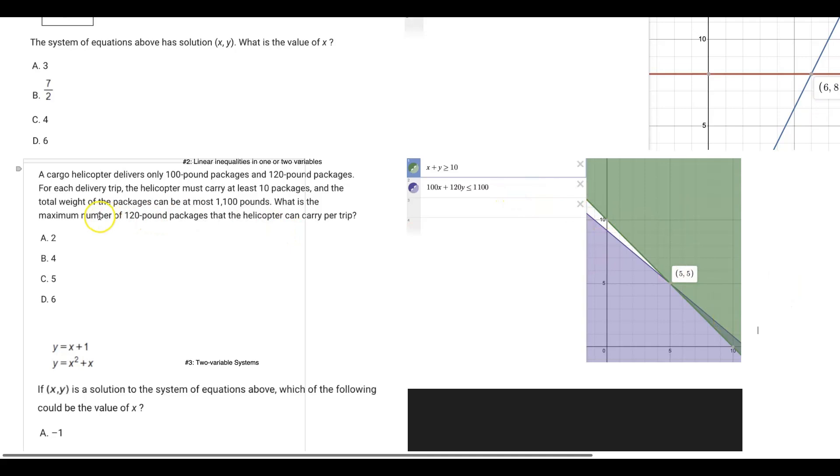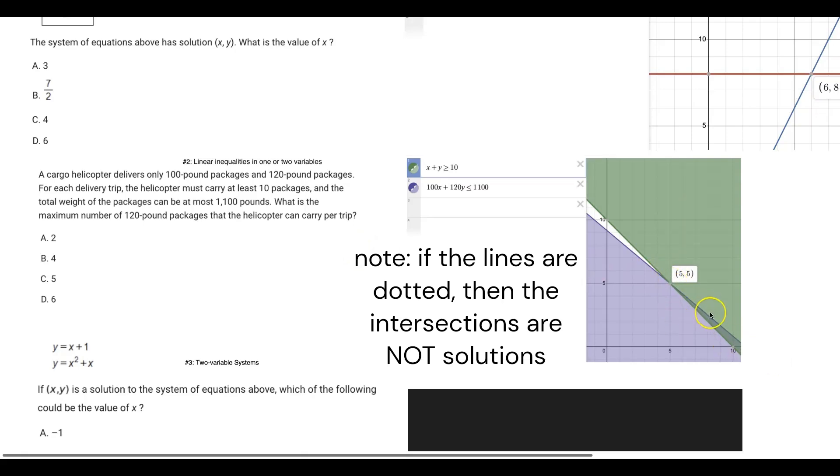At least 10 packages and also under 1,100 total pounds. If we want to find the maximum number of 120 pound packages, we want to look for the maximum y value at any of the intersections or shaded mutual areas. At the top, the apex of the shaded area, we have intersection of 5,5.